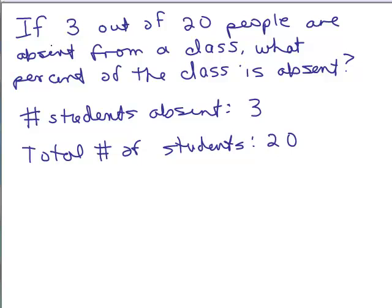Here's a problem. If 3 out of 20 people are absent from a class, what percent of the class is absent? Notice the number of students absent is 3, and the total number of students in the class is 20. We can write that as a portion, the total number of students absent over the total number of students. So I'm going to write that as 3 over 20.